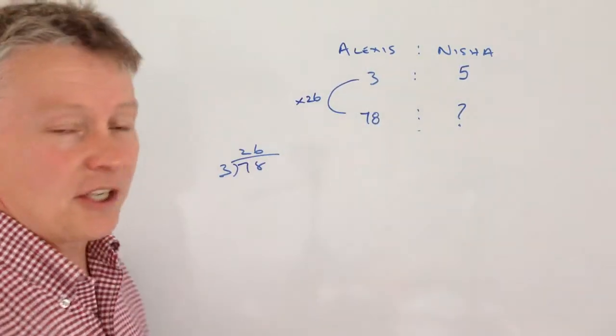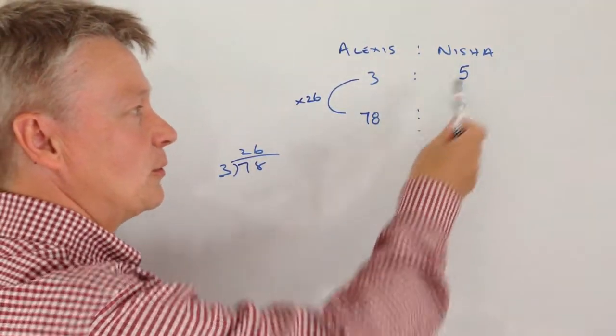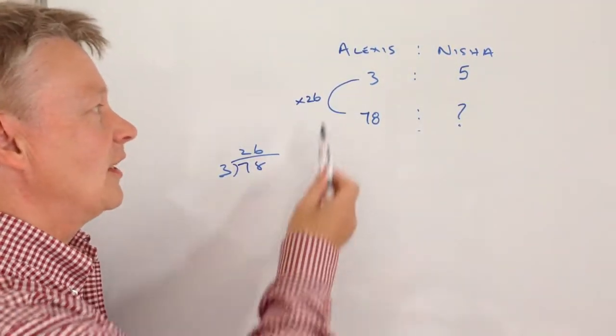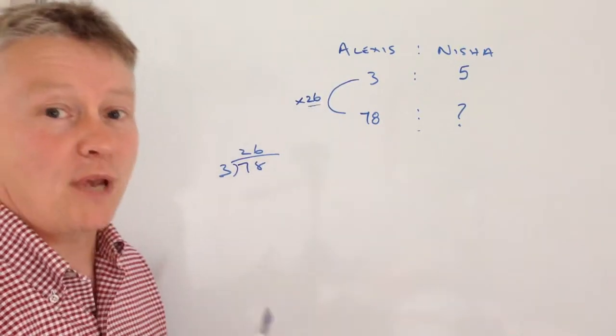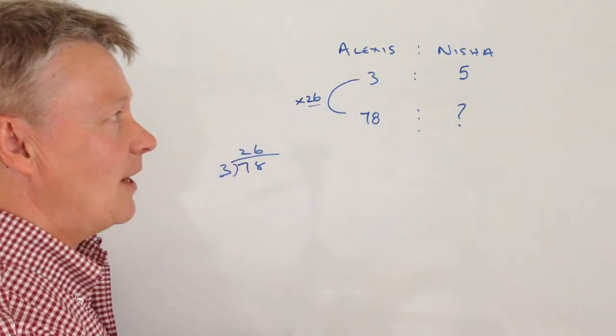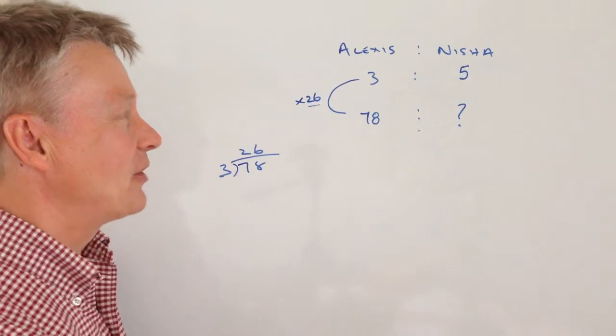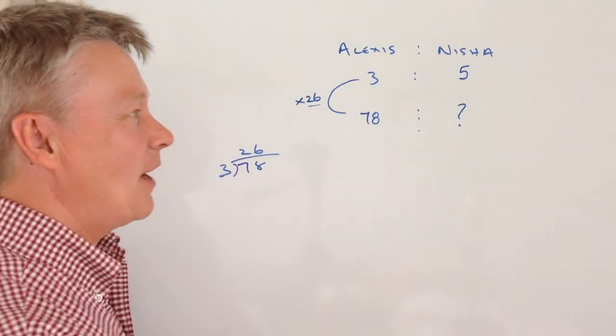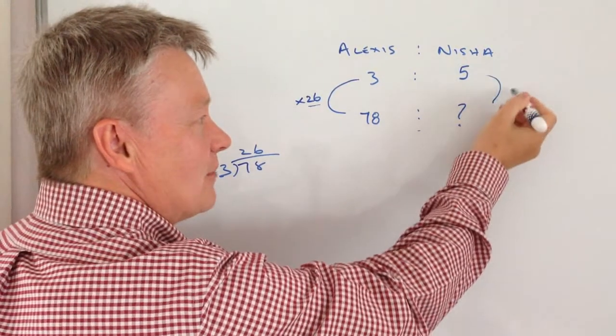So in other words, if the phone bill had been £8, then Alexis would have paid £3 and Nisha would have paid £5. But it's not - it's 26 times bigger than just £8. It's a massive phone bill. Okay, so Nisha is paying 5 times 26.